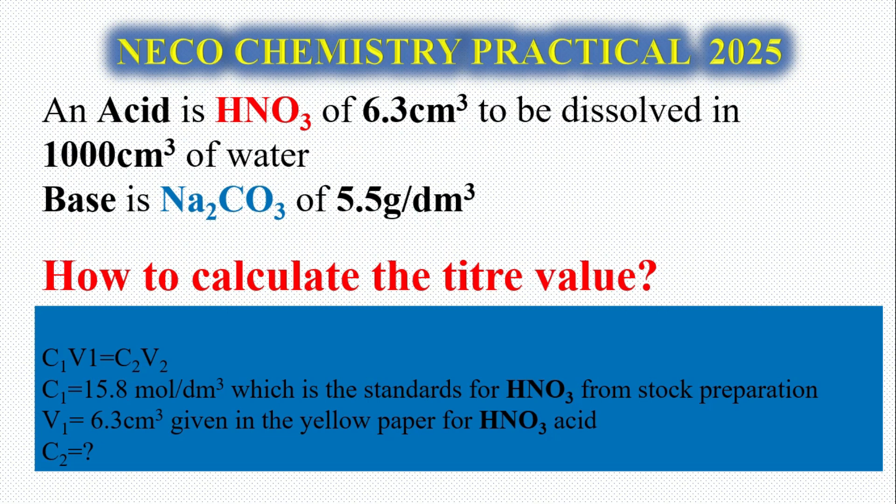Welcome back to my YouTube channel, my name is Already Kazum. Thank you so much for staying tuned to Outstanding Academy. Today we're looking at NECO chemistry practical, but this time we'll be looking at titration. The acid given is HNO3, 6.3 cm³ to be dissolved in 1000 cm³, and the base is Na2CO3 of 5.5 grams per dm³. I'm going to walk you through how to calculate the expected titre value. If you're here to subscribe to my channel, please quickly do that and click notification so anytime I post a new video you'll be notified.